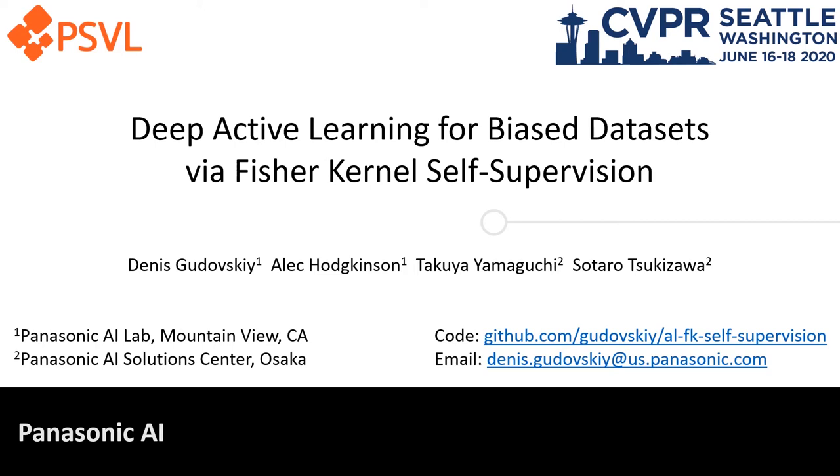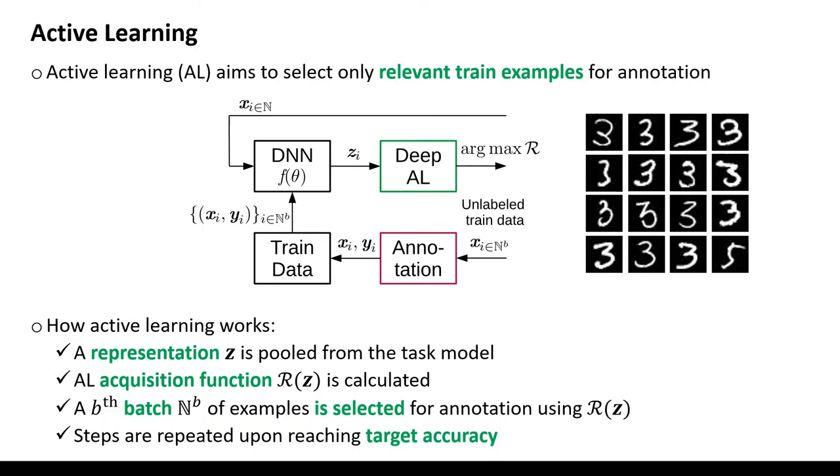In this video, I introduce our work on active learning for biased datasets. Active learning selects only relevant train examples for annotation to minimize its cost.